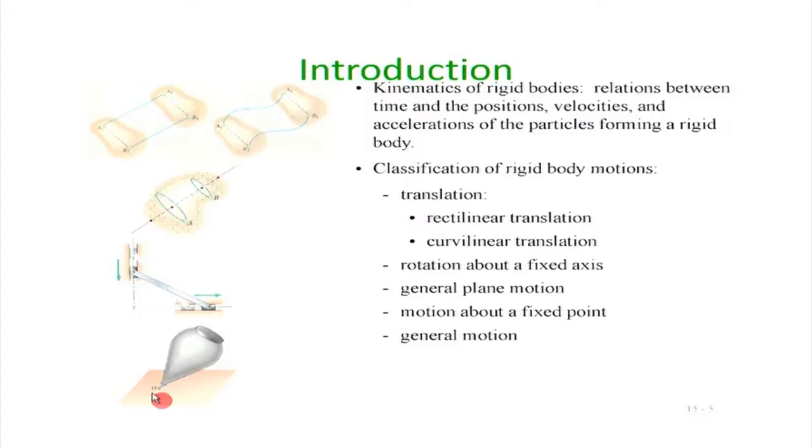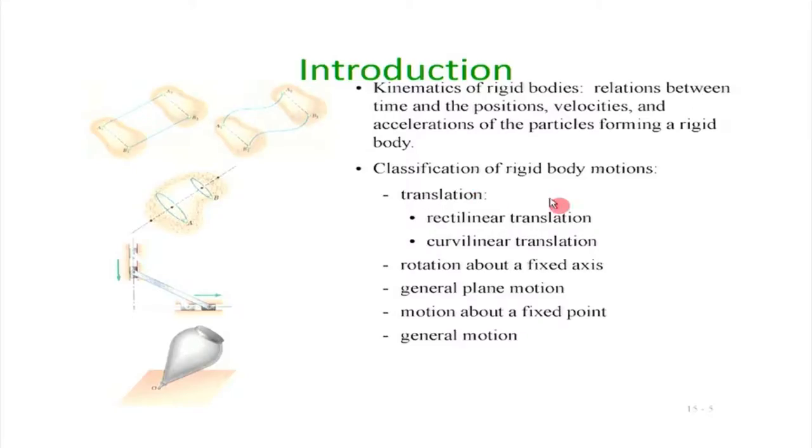For a rigid body, the possible motions can be classified as simple translation — a rigid body just moves in a 3D environment or in a 2D plane with no rotation whatsoever. That was the definition of a particle we had used: there is only translation and rotation is not playing any role. So we can have simple rectilinear translation or curvilinear translation.